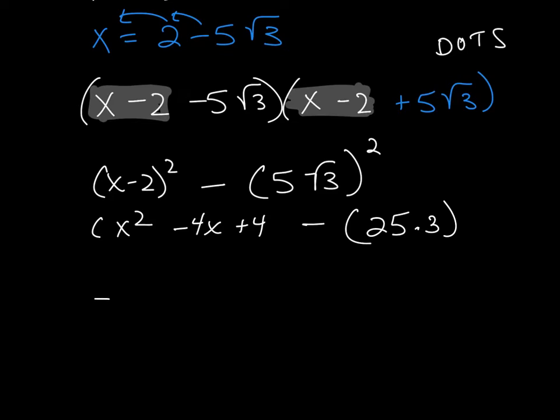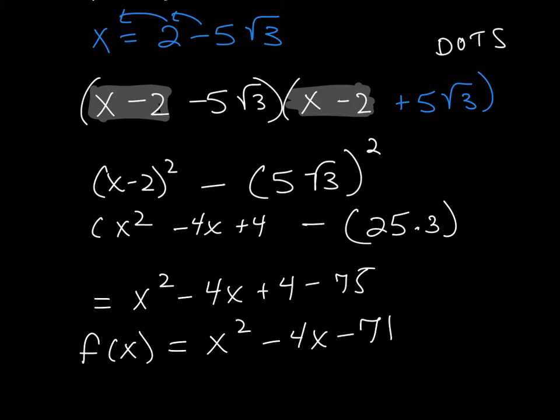Combine all of my like terms, and I'm left with x squared minus 4x plus 4 minus 75. So f(x) for the lowest term here would be x squared minus 4x minus 71.